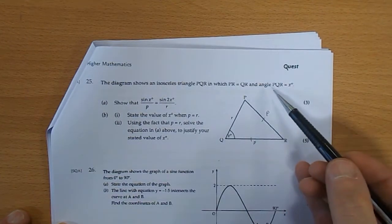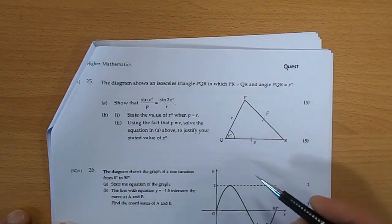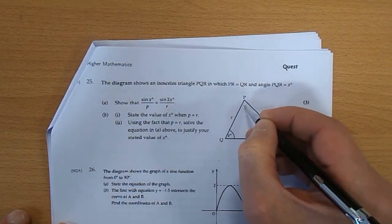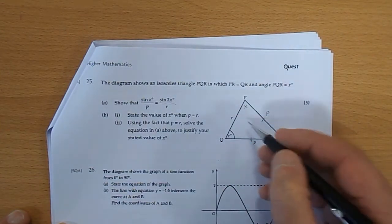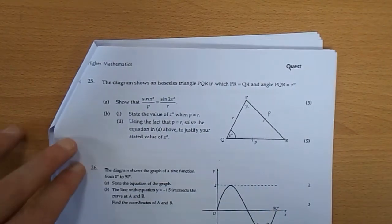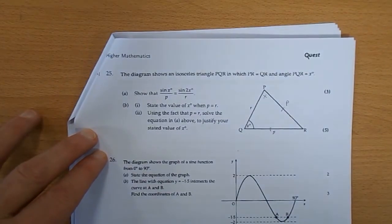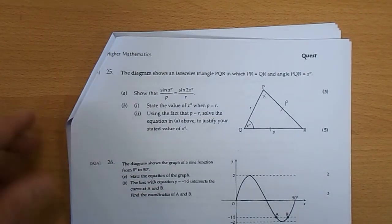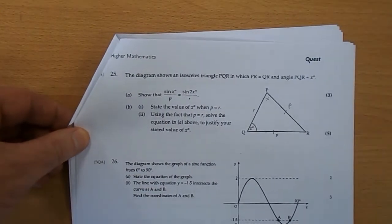And angle PQR is X. Incidentally, that's X as well. Then if this is an isosceles triangle, the two base angles are both the same. And we have to show that sine X over P is sine 2X over R. So let's get on with the maths.